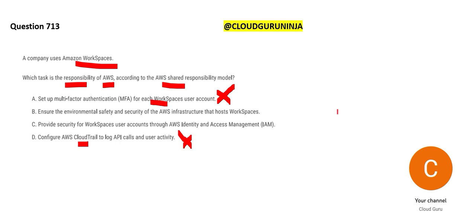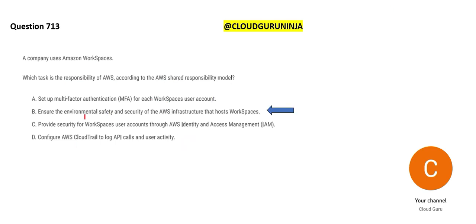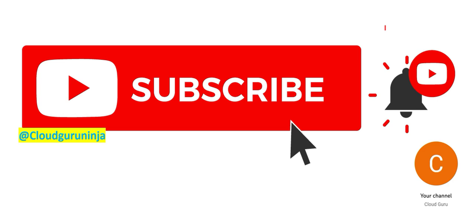When you create user accounts and credentials, that is your responsibility — AWS has no role there. The only role AWS plays is providing environmental safety and security of the AWS infrastructure. You cannot provide that because you do not know where the hardware is kept, where the data centers exist, what security is in place, or what environmental safety measures are needed — for example, whether buildings must be earthquake-resistant. AWS handles all of that.